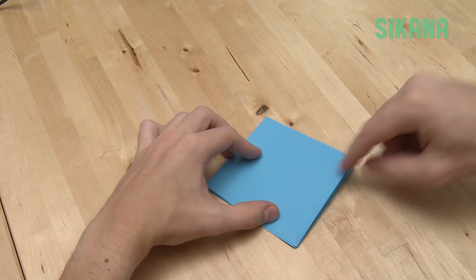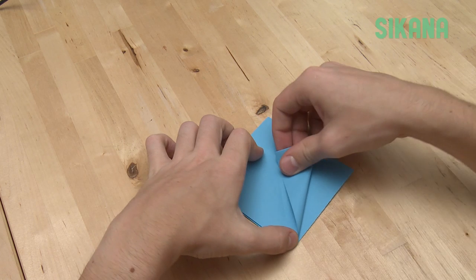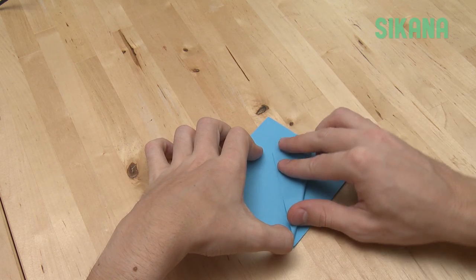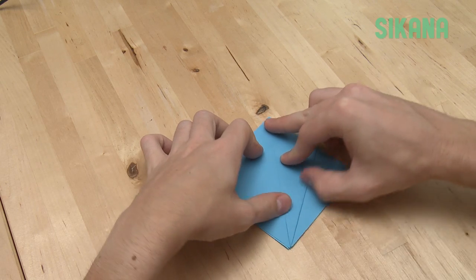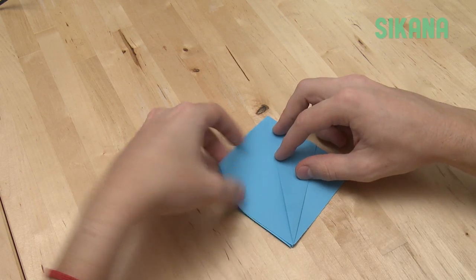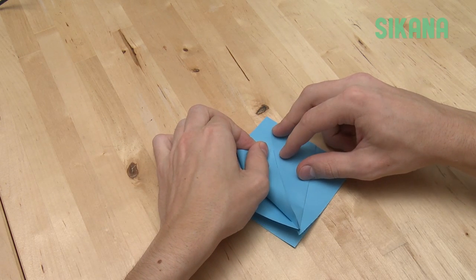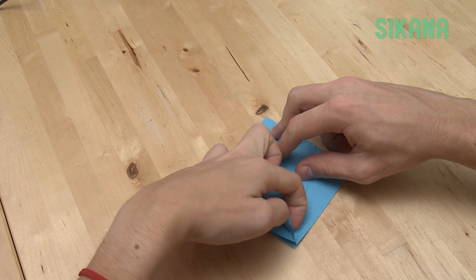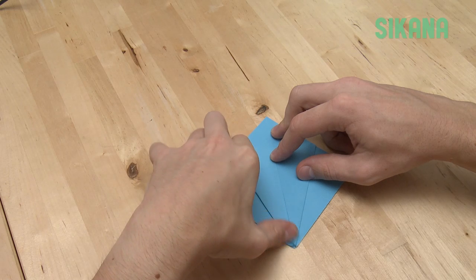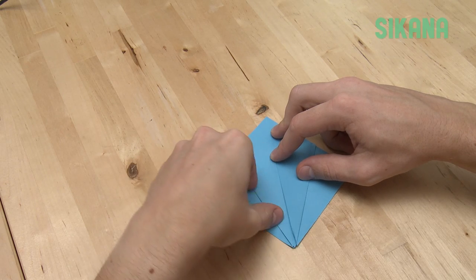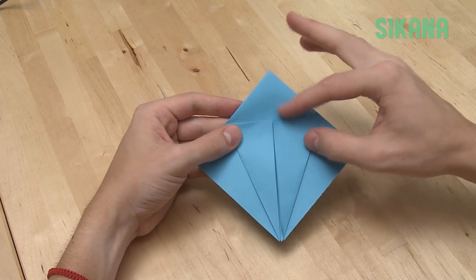Then fold this point on the center line. Repeat for the other side. Then fold the top by following the center and using this line as a reference point.